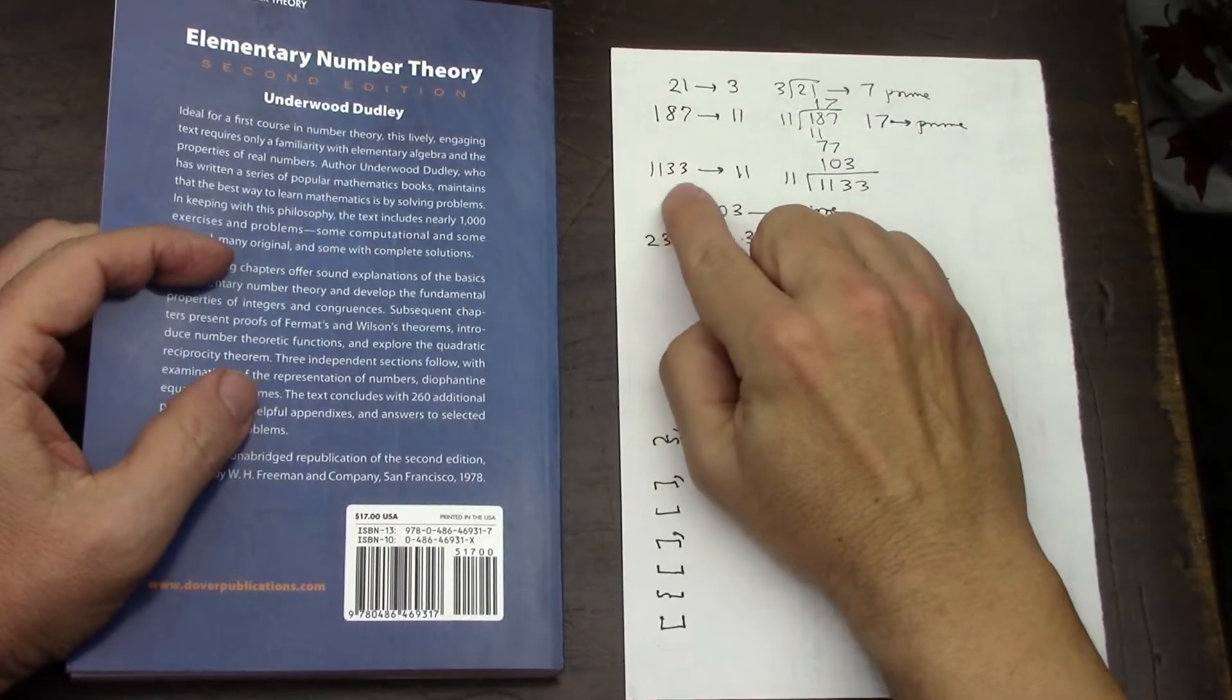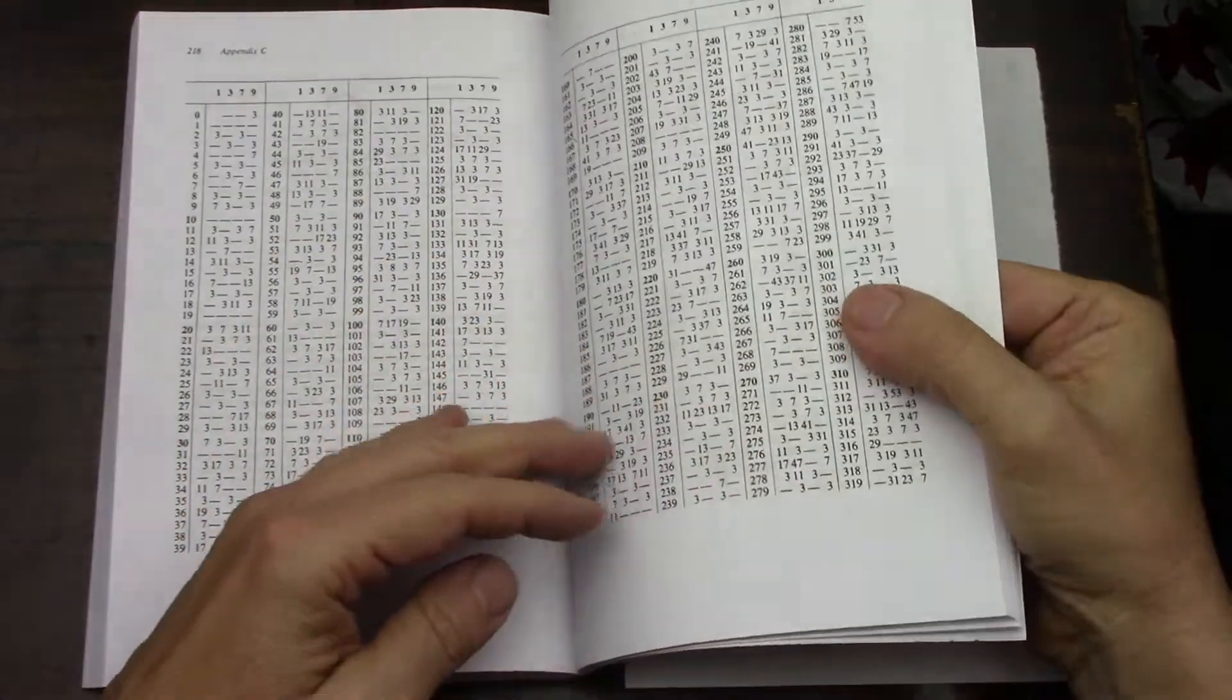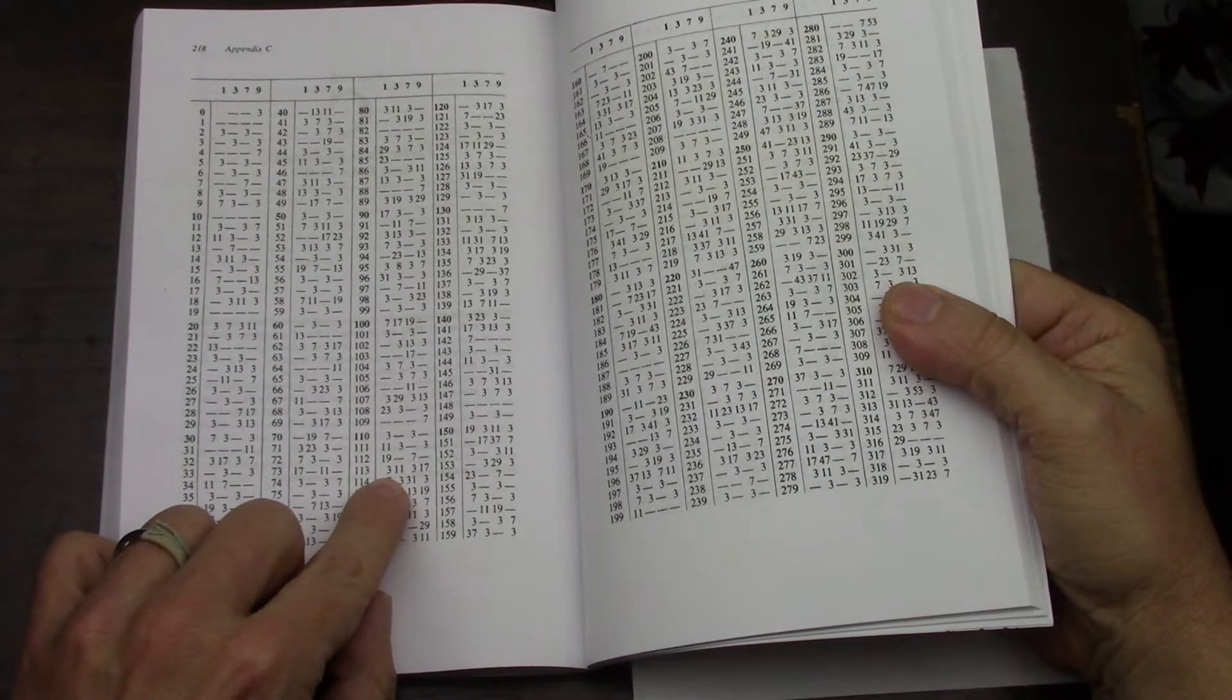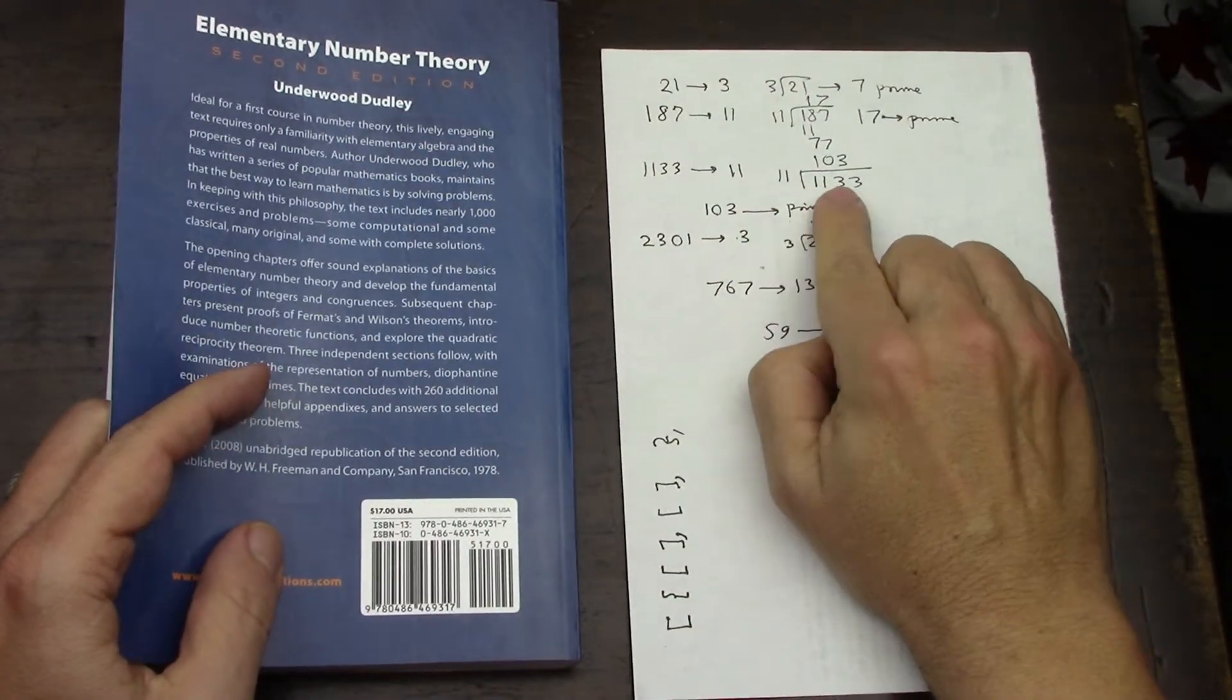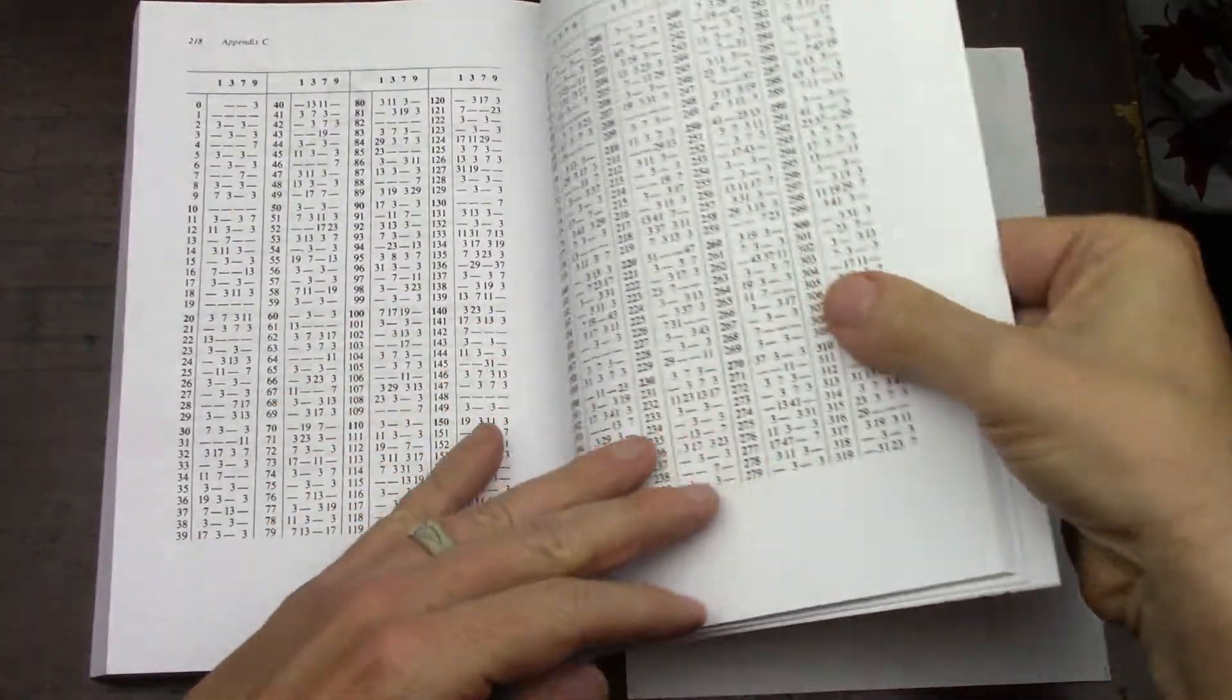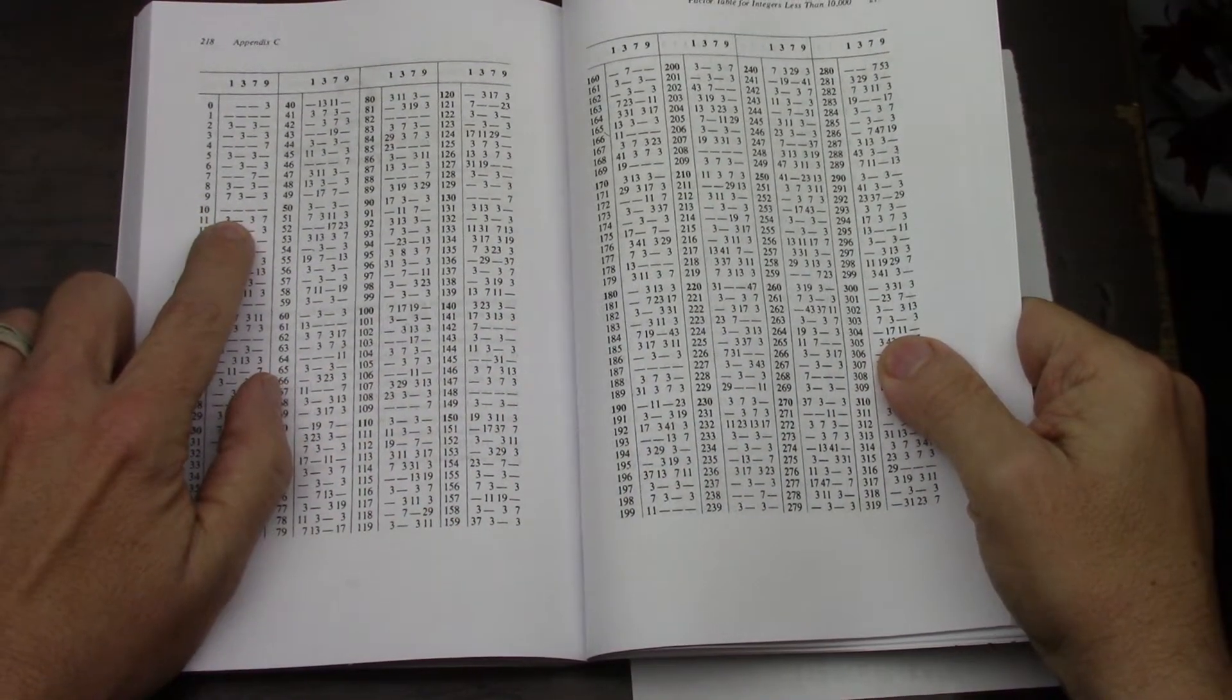Pick a bigger number, 1133. 1133 is 113, column 2. It's 11. So you divide it by 11, you get 103. You come here, and you look at 103, and it's prime.